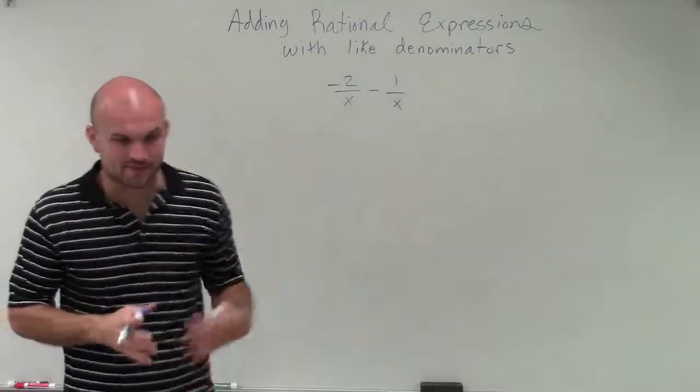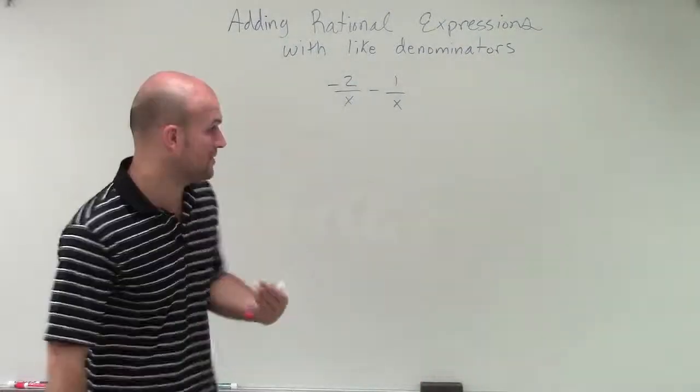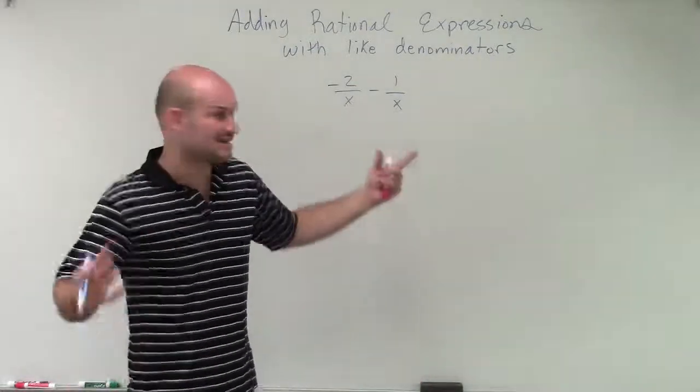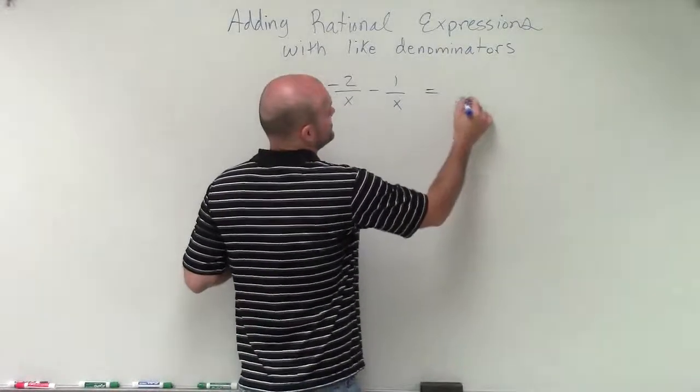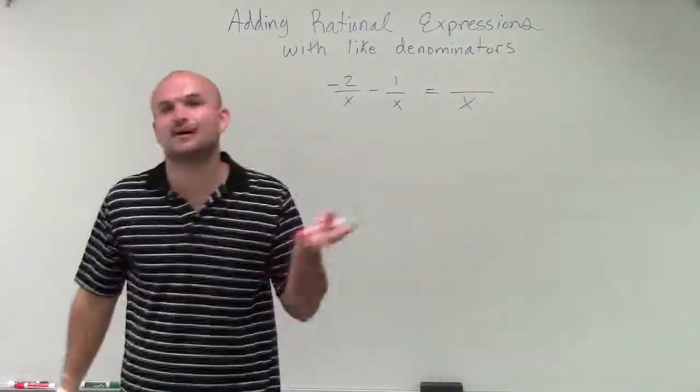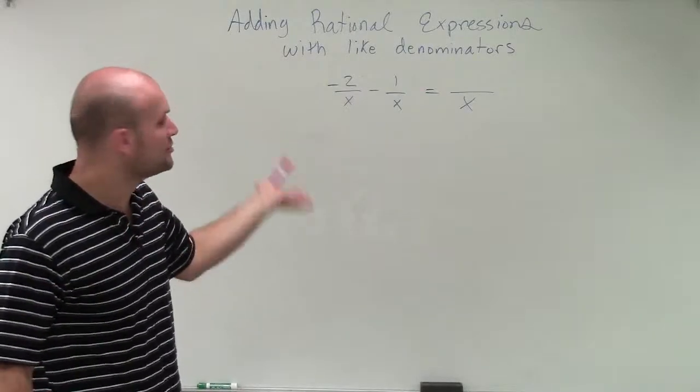OK. So this is a good example I put this up here. Because a lot of students, even though you can see, oh, they both have an x, so we know that our denominator is going to be x, a lot of students will get mixed up again on what exactly do I do with these numerators?